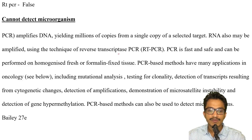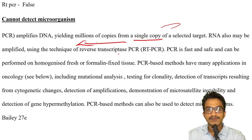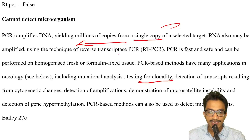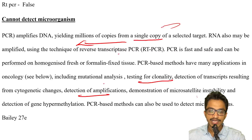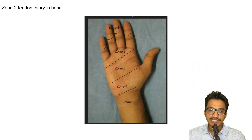Regarding false statements about RT-PCR, taken straight from Bailey: we can make a single copy into a million copies; PCR can be used for testing of clonality; we can detect amplifications; and we can also detect microorganisms. Therefore, 'cannot detect microorganisms' is the false statement.